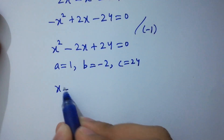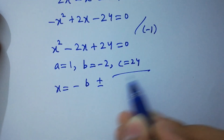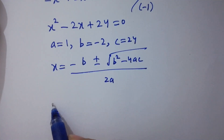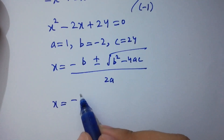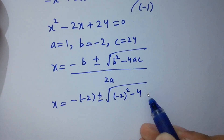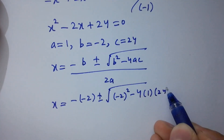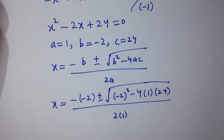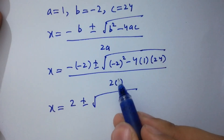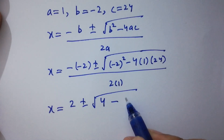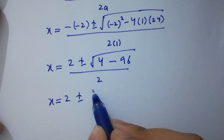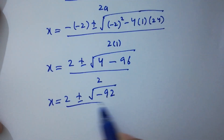Applying the quadratic formula: x equals negative b plus or minus square root of (b squared minus 4ac) over 2a. Substituting a equals 1, b equals negative 2, and c equals 24: x equals 2 plus or minus square root of (4 minus 96) over 2, giving x equals 2 plus or minus square root of negative 92 over 2.